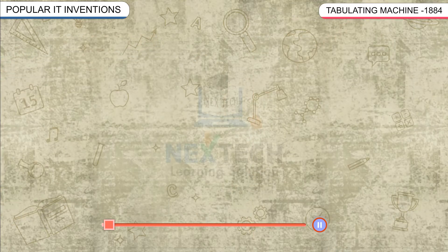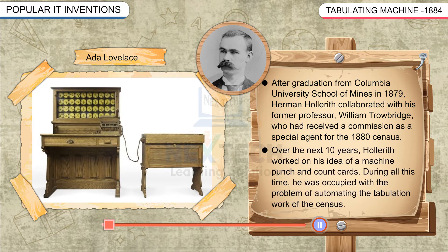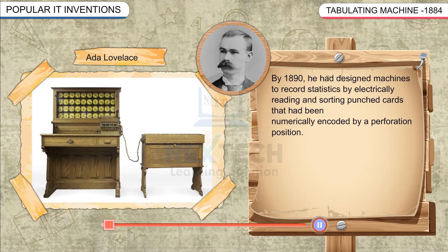Tabulating Machine: After graduation from Columbia University School of Mines in 1879, Herman Hollerith collaborated with his former professor William Trowbridge, who had received a commission as a special agent for the 1880 census. Over the next ten years, Hollerith worked on his idea of a machine to punch and count cards, occupied with the problem of automating the tabulation work of the census. By 1890, he had designed machines to record statistics by electrically reading and sorting punched cards that had been numerically encoded by a perforation position.